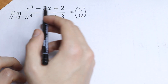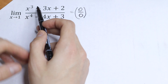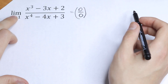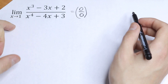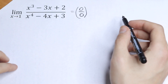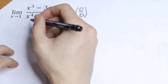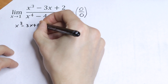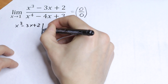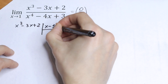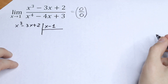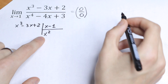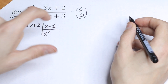So we need to factor out the expressions that give us an undefined answer and cancel them. We need to factor x-1 from the numerator and x-1 from the denominator. Let's do the numerator first. We have x-cubed minus 3x plus 2, and I want to divide this by x minus 1. Multiplying by x-squared gives us x-cubed minus x-squared.